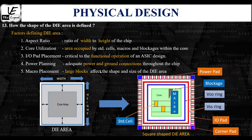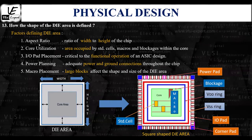If it is a square shaped die area, the aspect ratio must be equal to 1, meaning the width and the height are equal. If the shape is rectangular or rectilinear, the aspect ratio will not be equal to 1. The aspect ratio also affects routing resource availability and can influence congestion within the design, making it a critical parameter in deciding the die area shape during physical design.